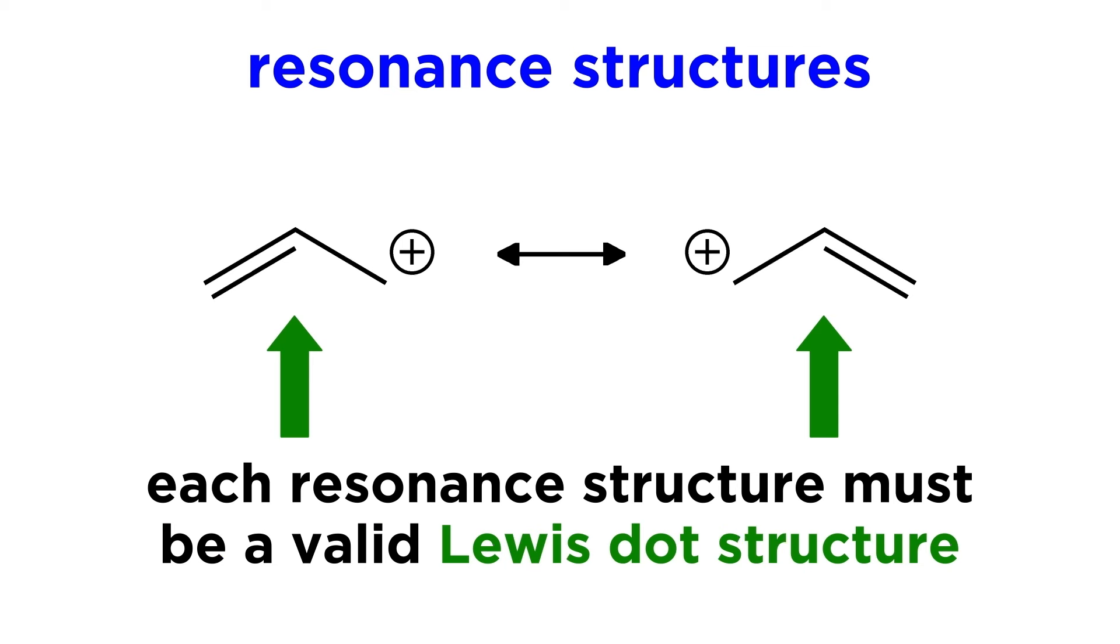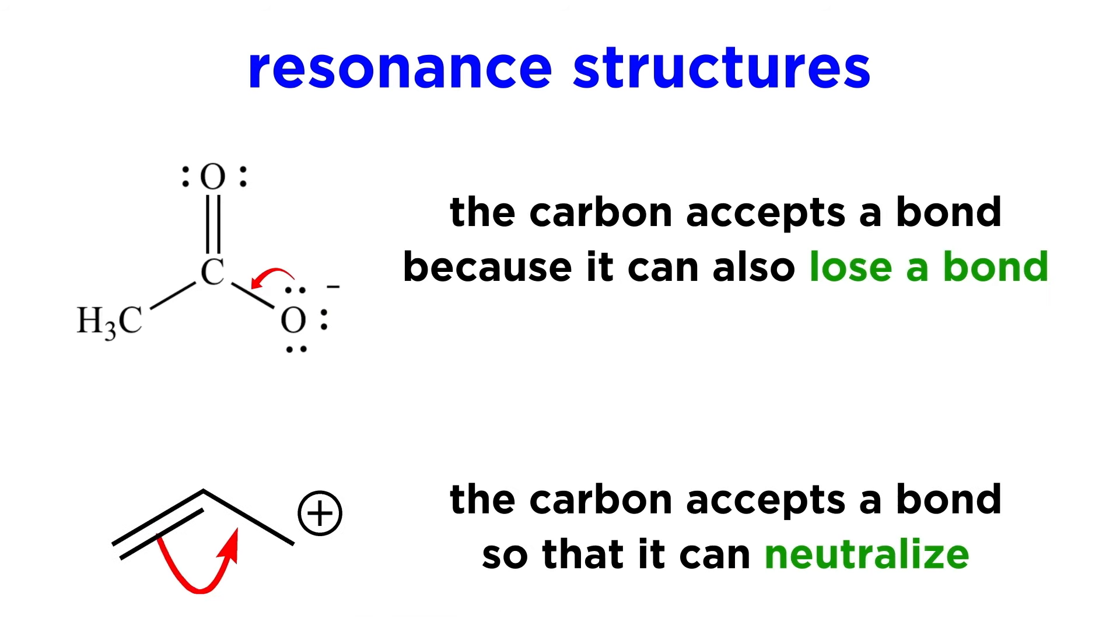Each resonance structure must be a valid Lewis structure, so if pushing a pi bond over would require that a carbon accept a fifth bond, it's not possible, and that pi bond will remain completely localized right where it is. Atoms will accept lone pairs or pi bonds either when they can also lose a bond or if they are positively charged and need an additional electron domain to neutralize. This will become more and more intuitive as we learn more organic chemistry.